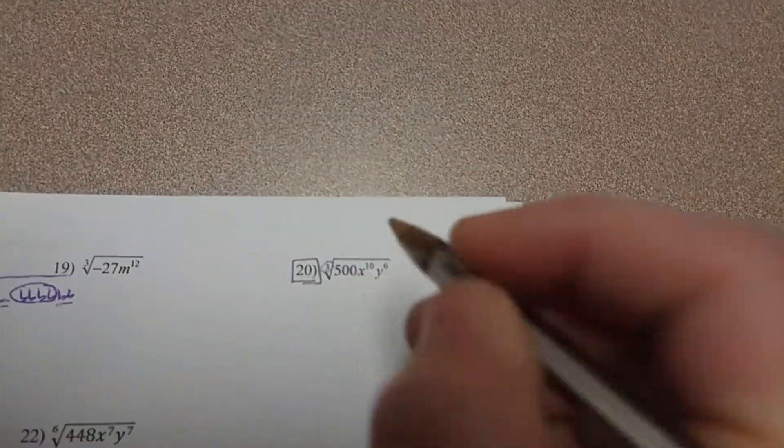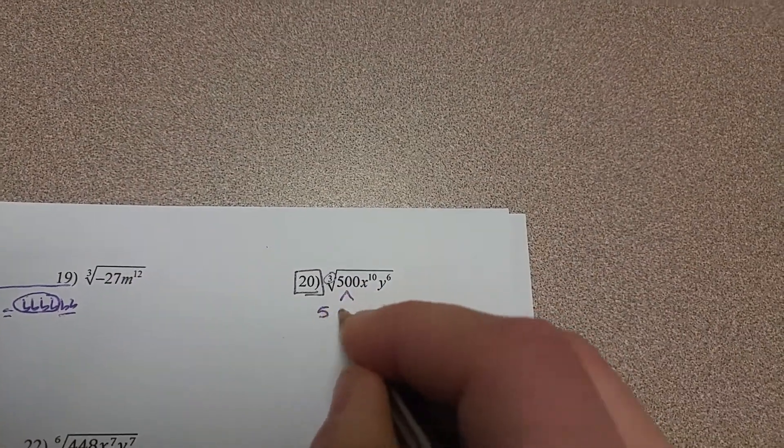This is a cube root, so we're going to be looking for groups of 3, so we'll go ahead and start by breaking this down.